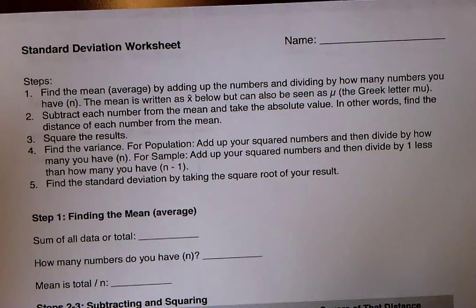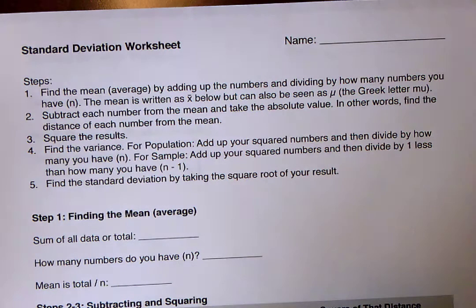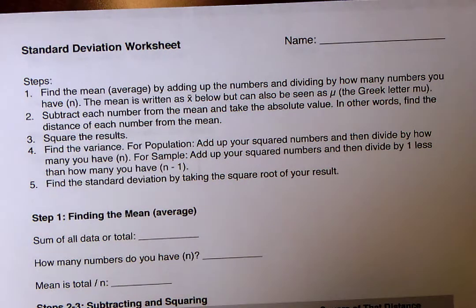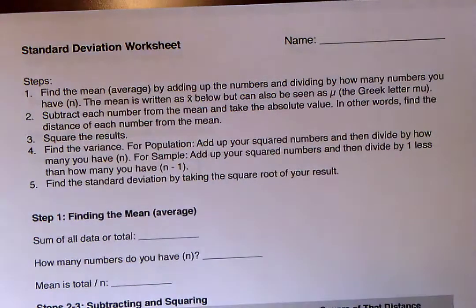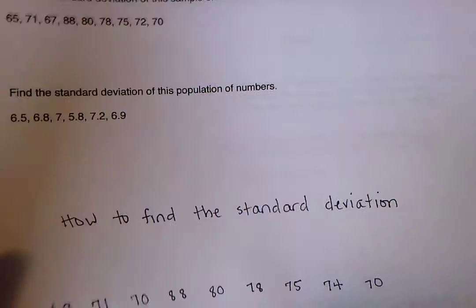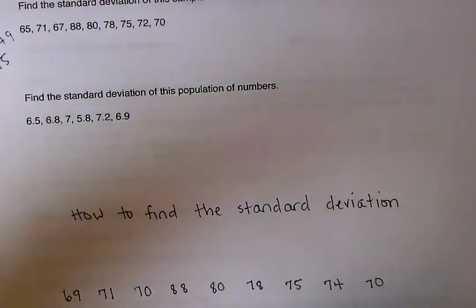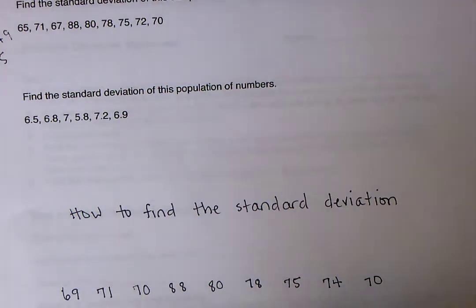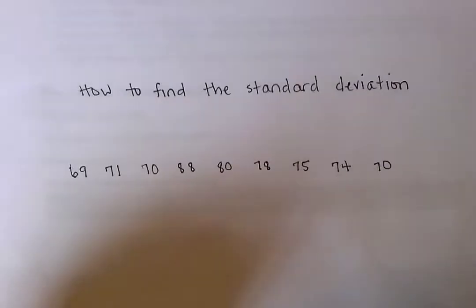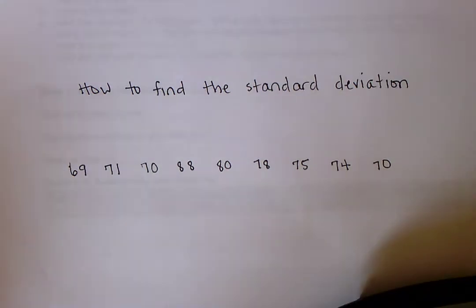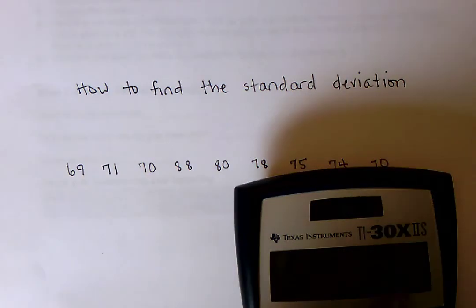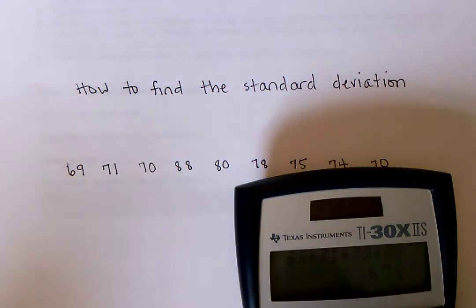So let's start. First what we have to do here is find the mean or the average by adding up the numbers and dividing by how many you have, and we'll call that n, the number of numbers we have. So if we go back over here, we'll figure out what the total is. Now I've already calculated this total, but you can do that on your calculator here, and I'll just show you.